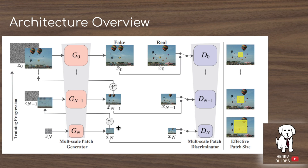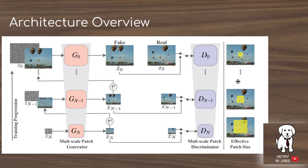As the generator scales up from 4x4 to 8x8, it uses residual learning. Similar to ResNet, it takes the previously generated image and propagates it forward, mapping Gaussian noise into a new image that is added element-wise with the upsampled previously generated image to produce the next scale. The discriminator then looks at the original image downsampled to 8x8 and slides the patch over it to classify patches rather than the entire image. The effective patch size decreases as you go up to higher scales.